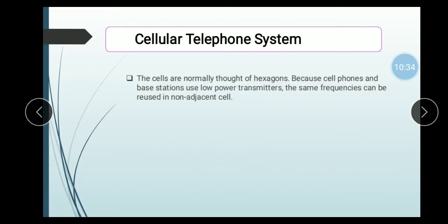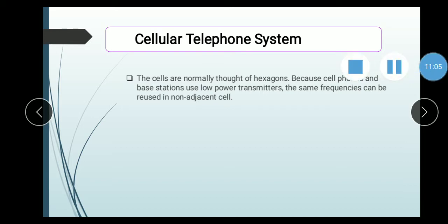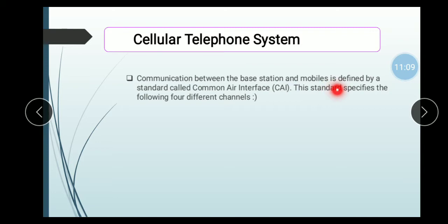The cells are normally throughout hexagons. Because cell phones and base stations use low-power transmitters, the same frequency can be reused in non-adjacent cells. When we move from one area to another, our call does not end — it is connected through the hexagonal cells. The communication between base station and mobile is defined by a standard called Common Air Interface, abbreviated as CAI.